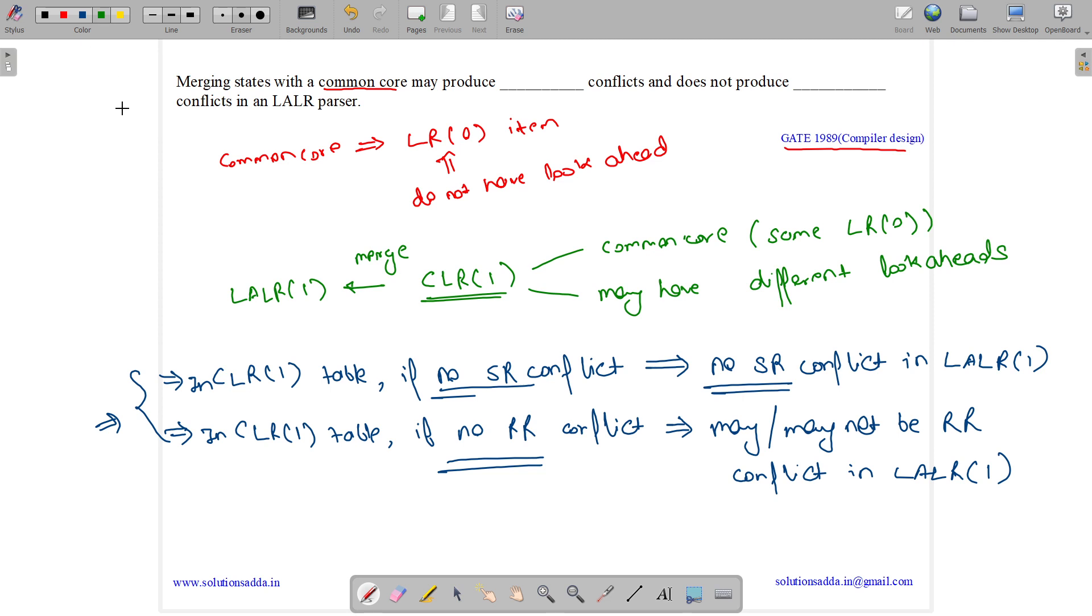Now let us answer this. It is asking about merging states with common core. Common core means same LR0 items. It may produce RR conflict. So the answer is: it may produce reduce-reduce conflicts, and it does not produce shift-reduce conflicts.